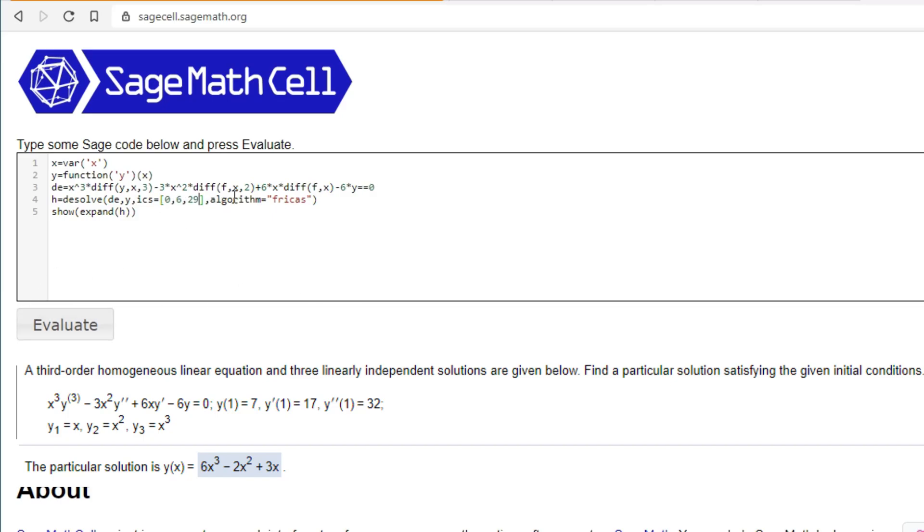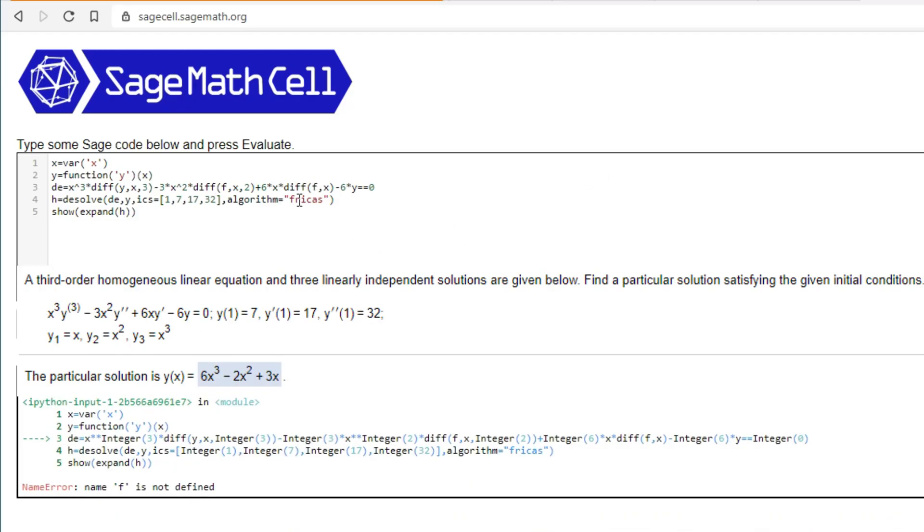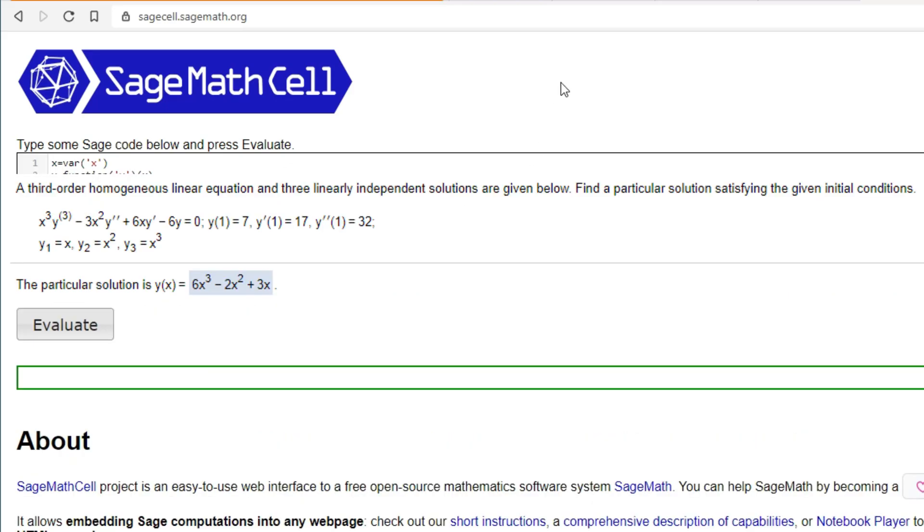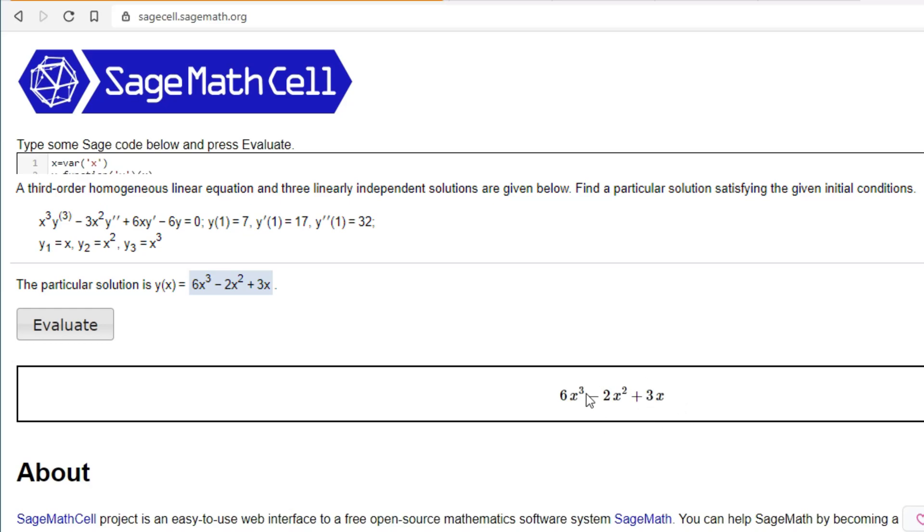And then now we change the initial conditions. So they're all starting at 1, 7, 17, 32. And then you can ignore the y1, y2, y3. There we go. And that is the particular solution to this problem.